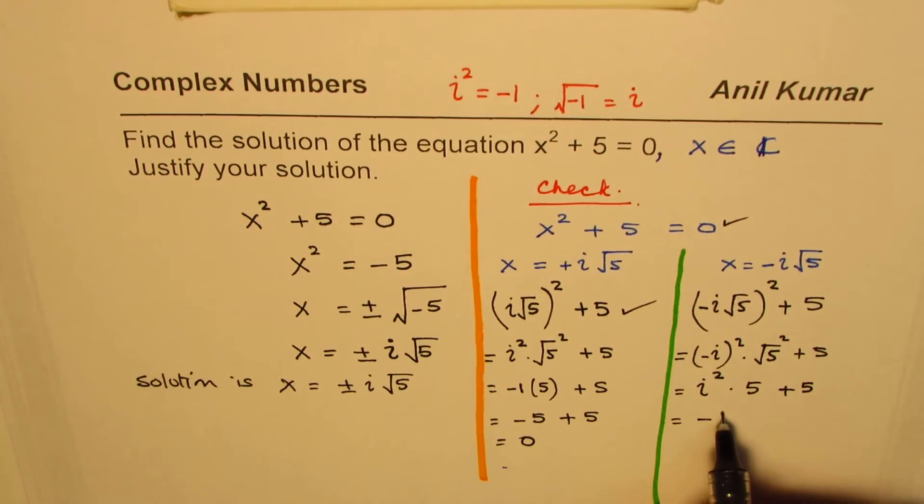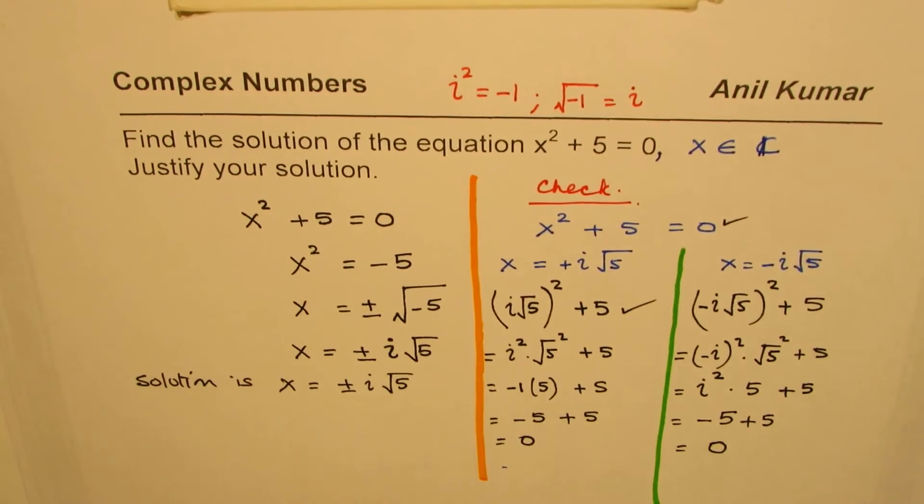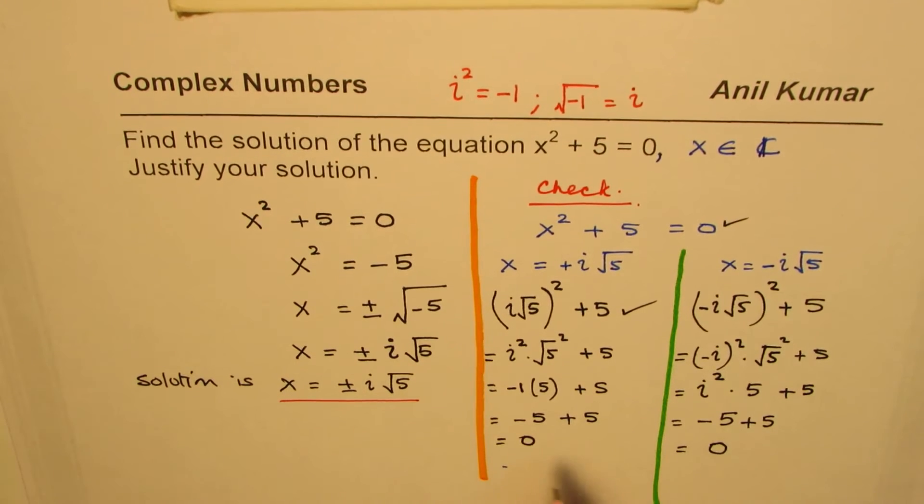Now, i² is negative, we could write this as -5 + 5, and this is also 0. Do you see that? So both are the correct answers. So we verified it. Both are valid answers. So it works.